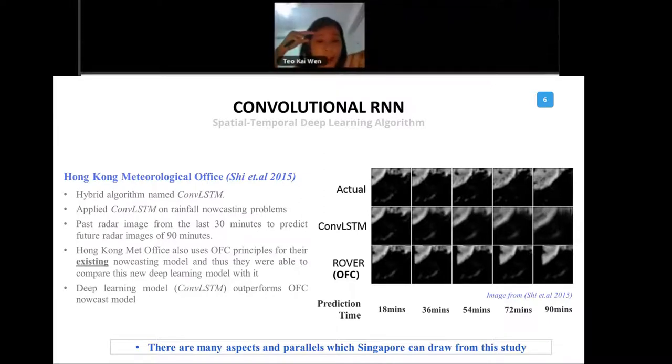This Hong Kong Met Office, coincidentally, they also use the same optical flow constraint principle, same as Singapore, for their nowcast model. They are able to compare this deep learning model with the optical flow constraint model that they have. And they found that this deep learning model ConvLSTM actually outperforms the optical flow constraint nowcast model. You can see the results here are quite apparent.